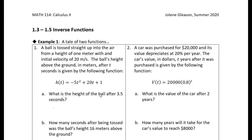This first function represents the height of a ball that has been tossed up into the air from a height of one meter at an initial velocity of 20 meters per second. We have this function for height in terms of time t in seconds, and the height is in meters. The first question is just asking what's the height of the ball after three and a half seconds.